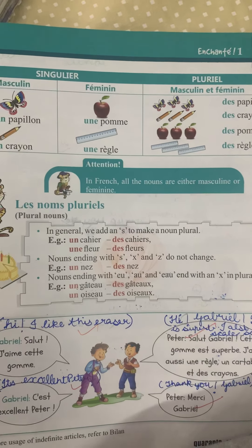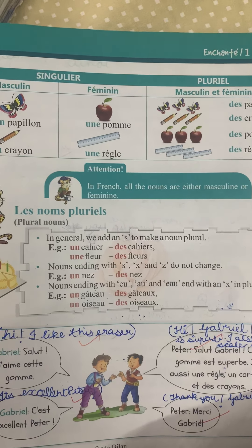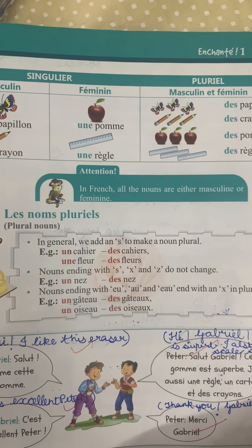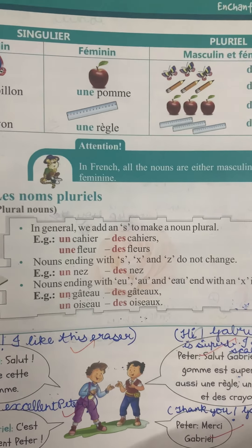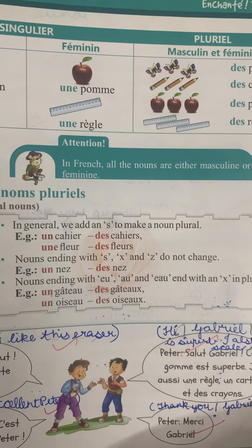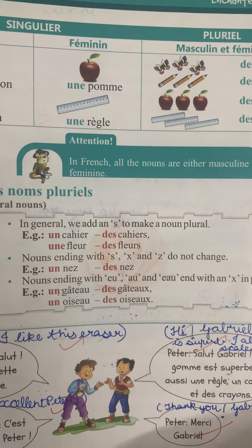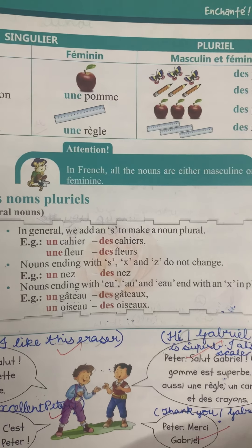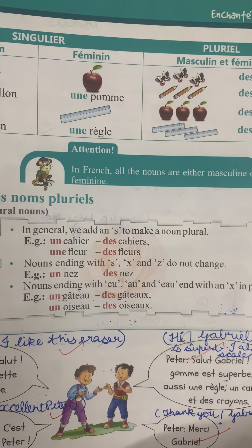In French, all nouns are either masculine or feminine. In general, we add an 's' to make a noun plural, and the articles un and une will change to des. Un cahier becomes des cahiers — we have added an 's'. Une fleur becomes des fleurs — again we have added an 's'. Some nouns which end with 's', 'x', and 'z' do not change.